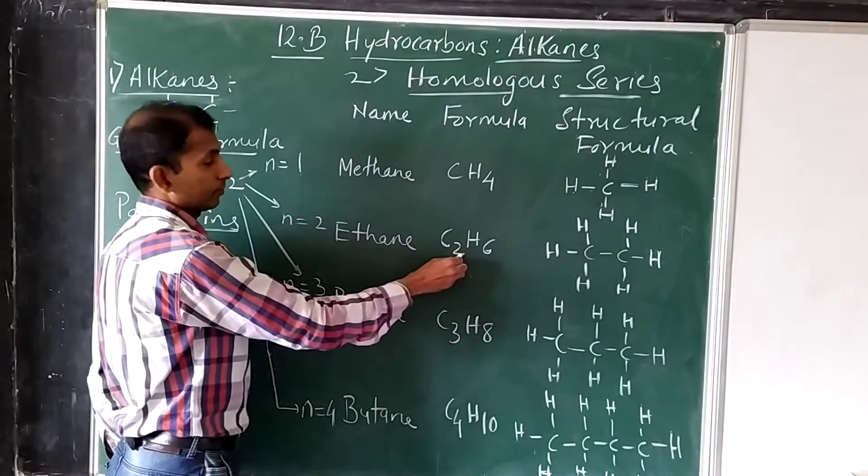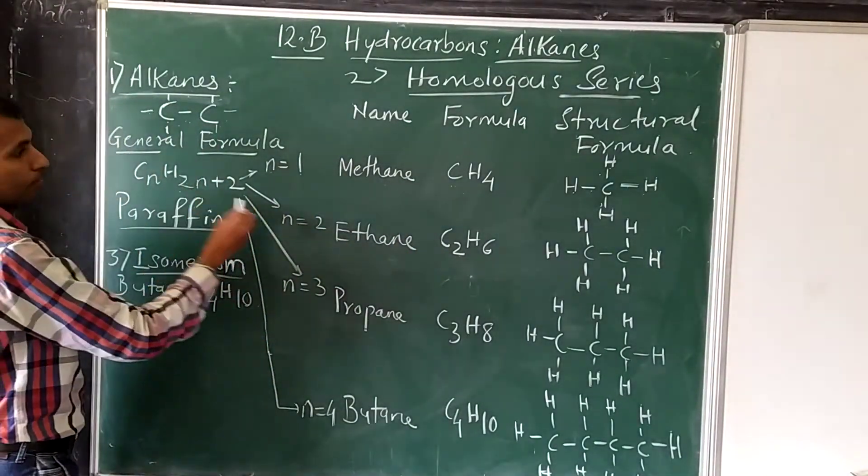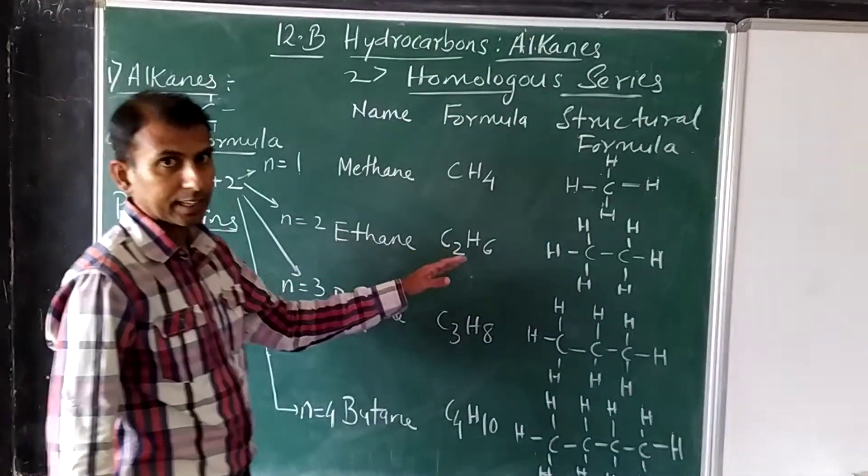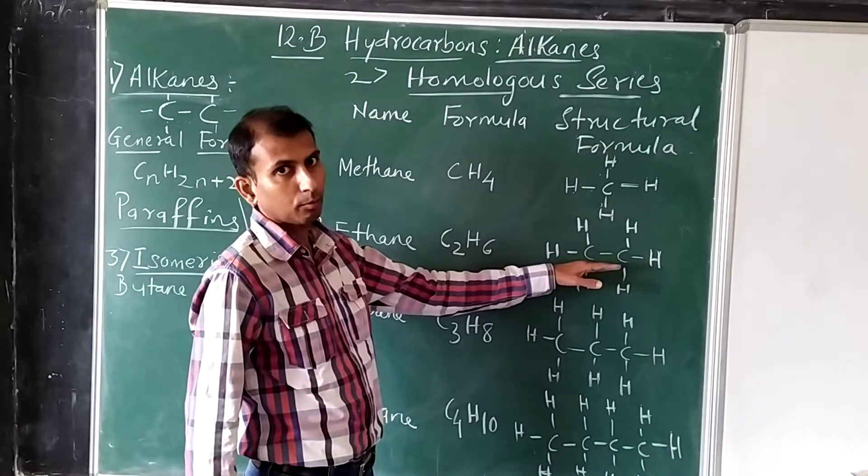The second member in the homologous series: n equals 2, substitute 2, and you will get ethane, C2H6.